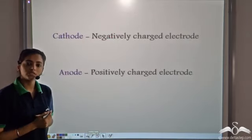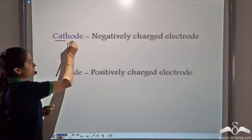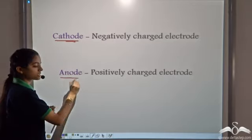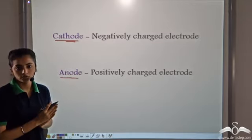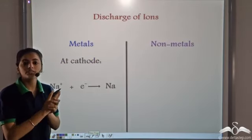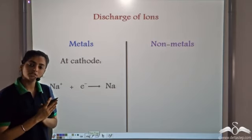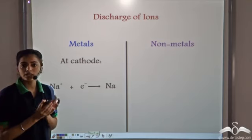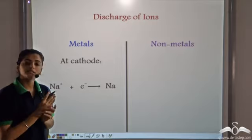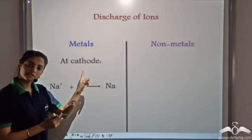During electrolysis, there are two types of electrodes: the cathode, which is the negatively charged electrode, and the anode, which is the positively charged electrode. During electrolysis, the cations migrate towards the cathode. Cations are positively charged, and unlike charges attract. So during electrolysis, the metals are discharged at the cathode.